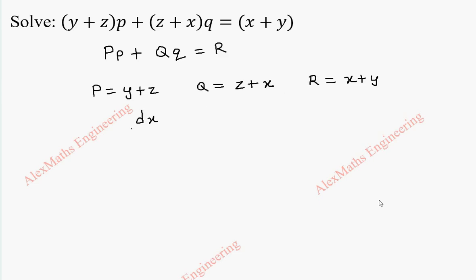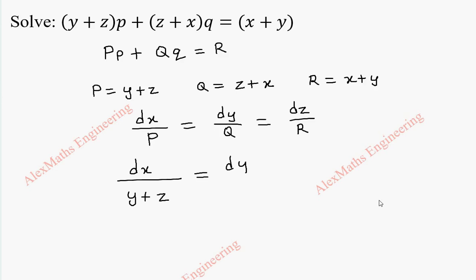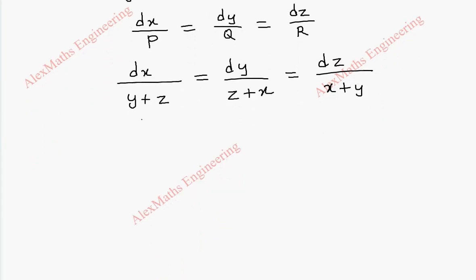To get this solution, we have to solve dx by capital P equal to dy by capital Q equal to dz by capital R. Now we substitute dx by y plus z equal to dy by z plus x equal to dz by x plus y. If we choose any two terms directly, it is not possible to find the solution by integration, so we are going to use Lagrange's multiplier.